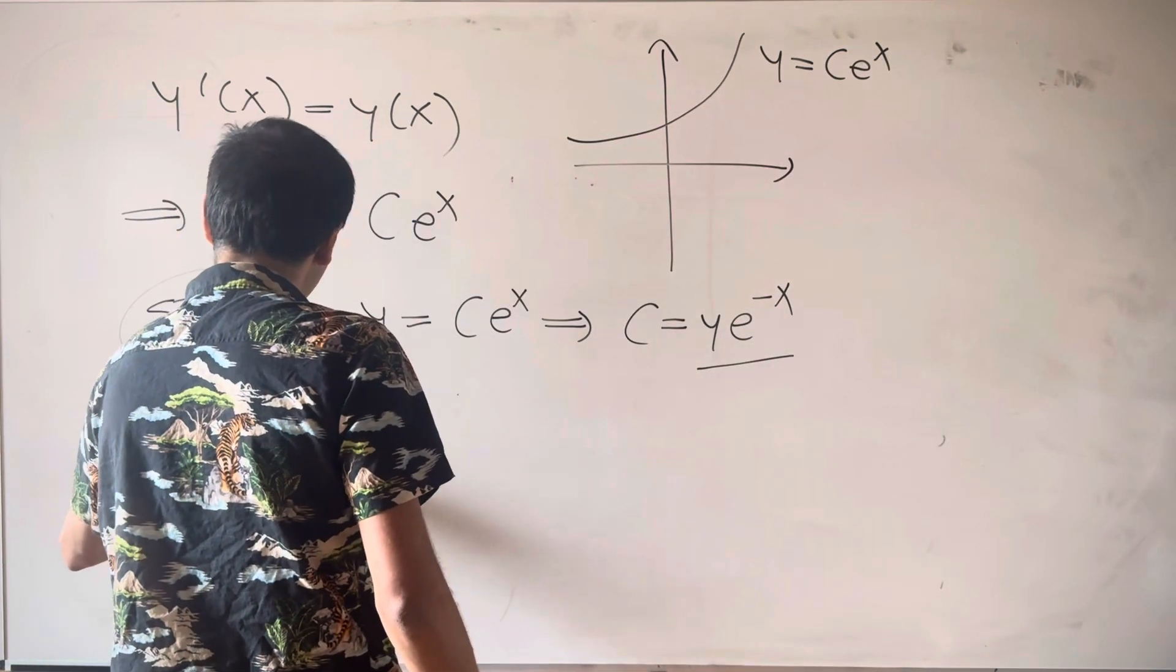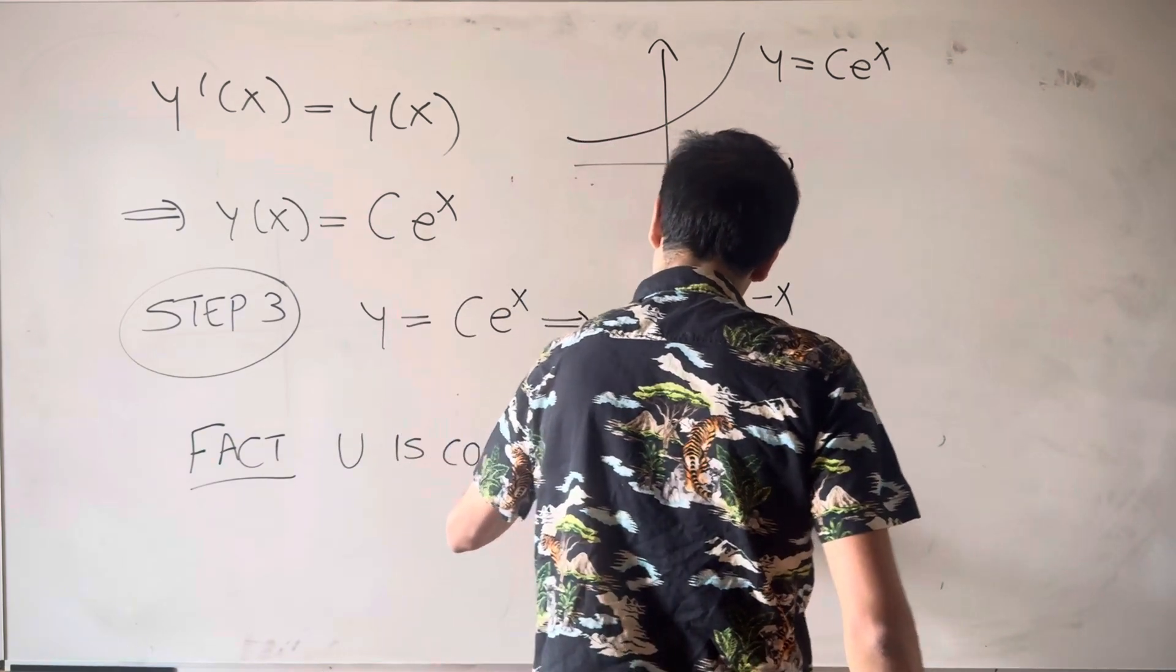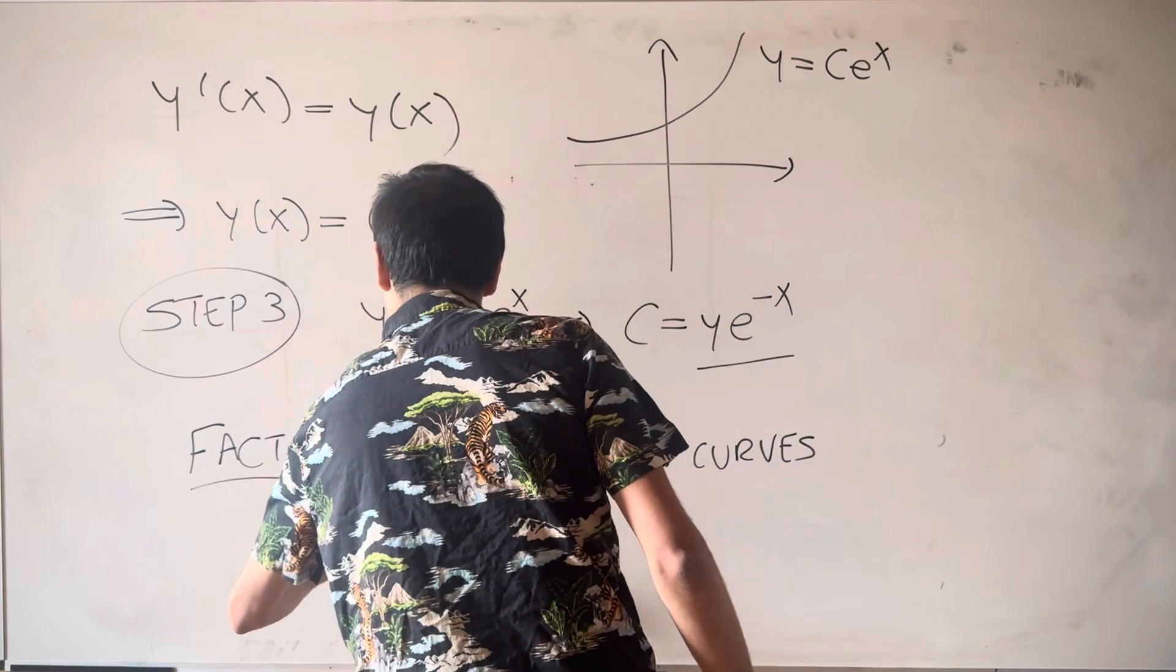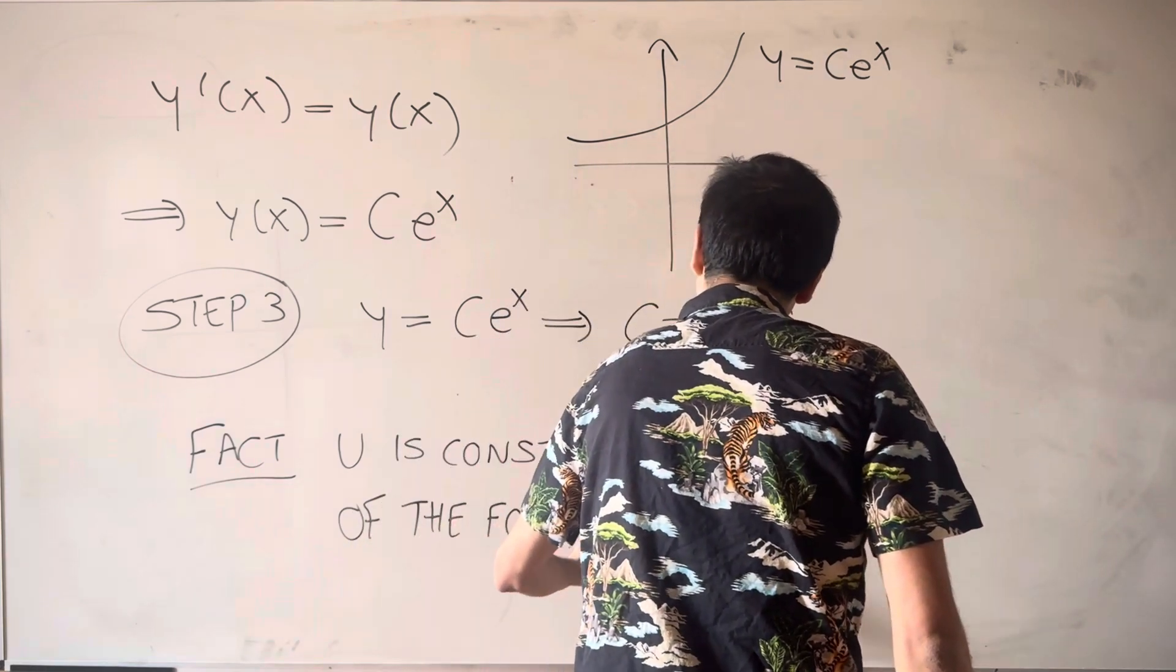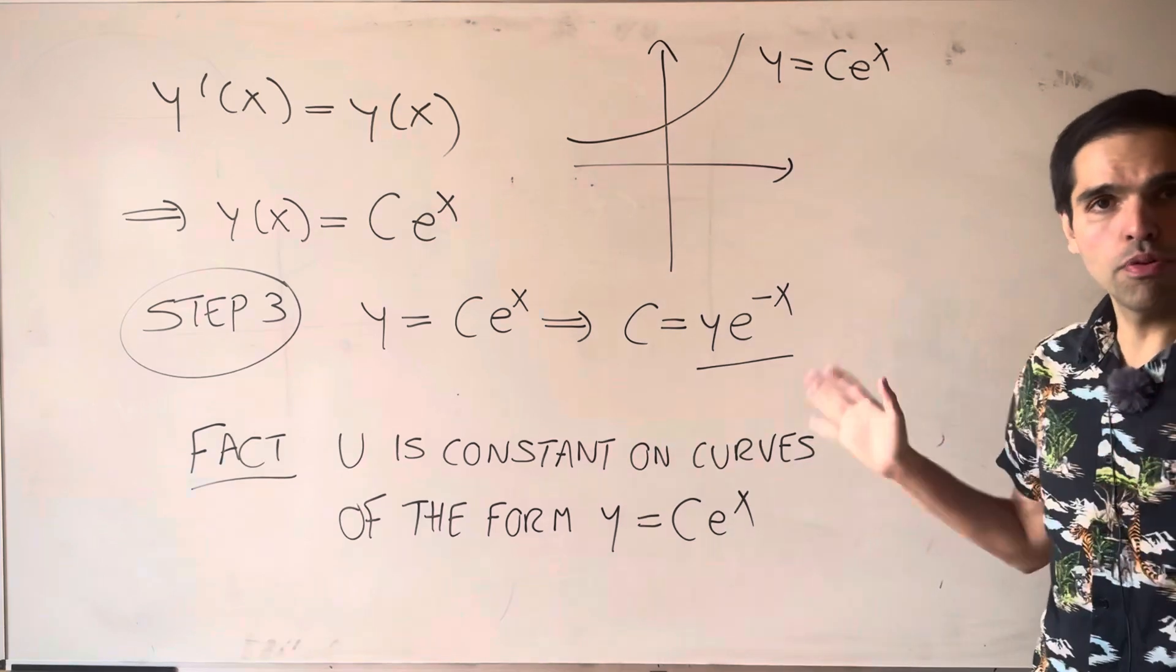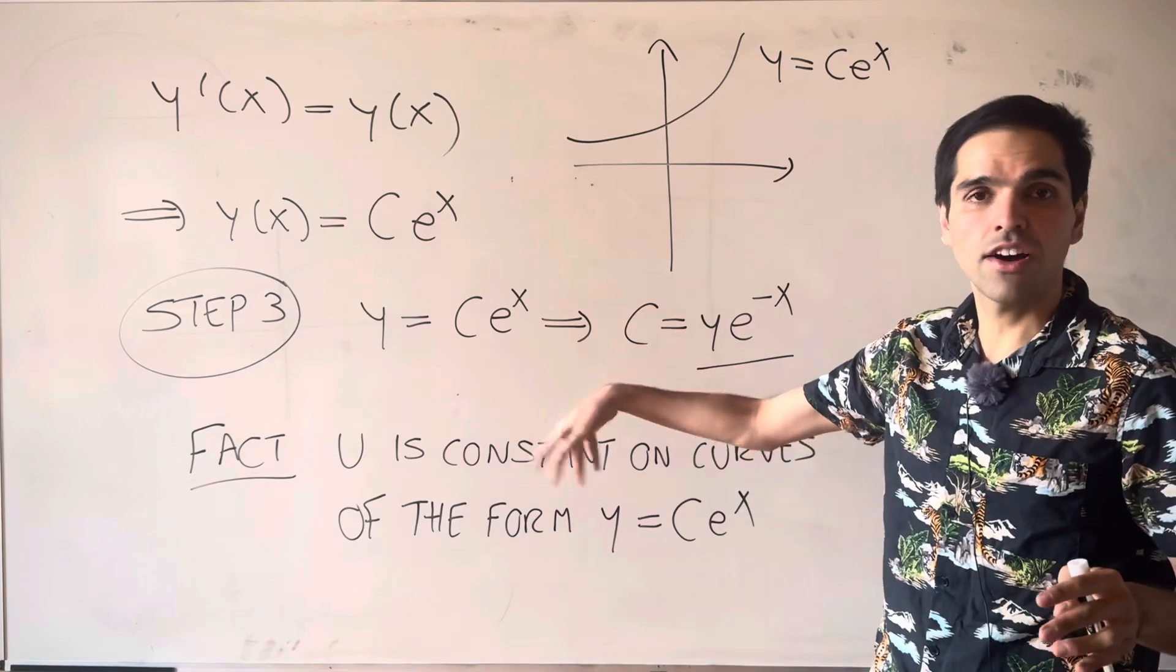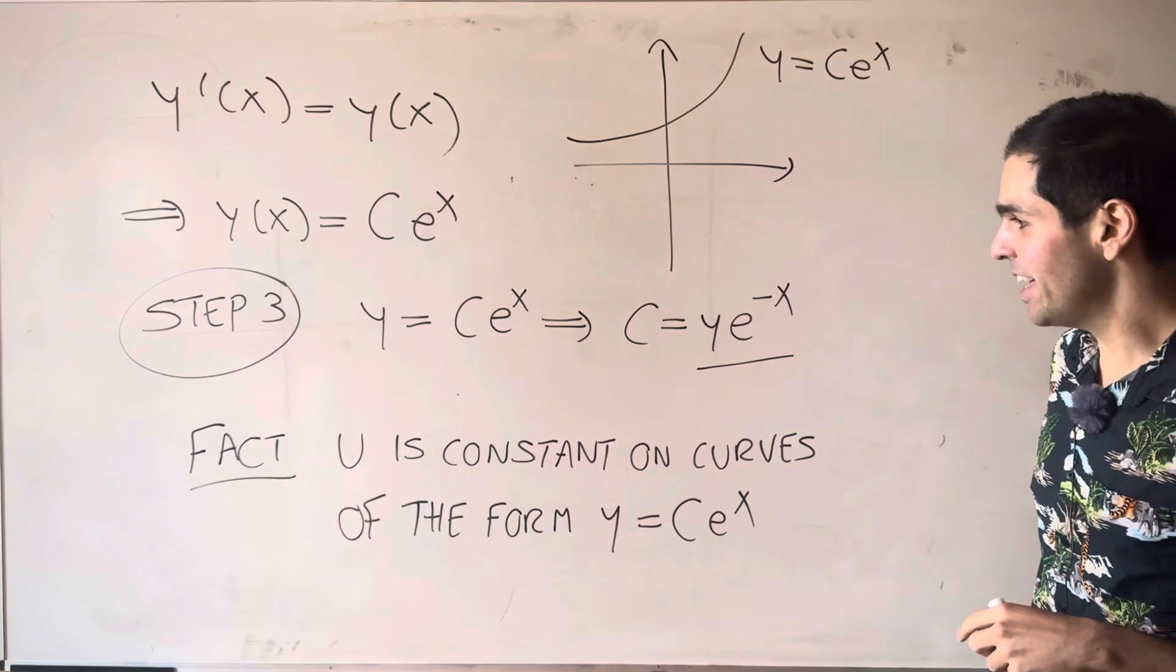So fact, u is constant on curves of the form y is C e to the x. And the proof of this is in the lecture notes. You can check it just by calculating u of x comma C e to the x and differentiating this with respect to x.